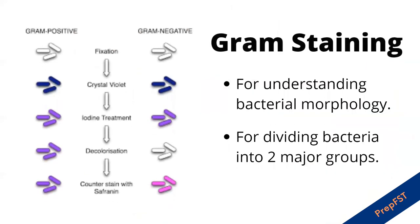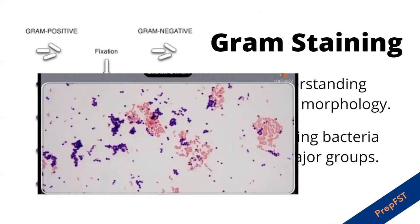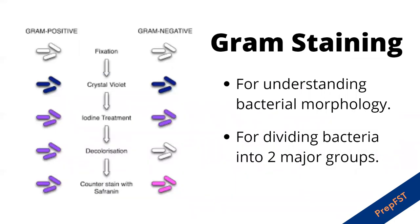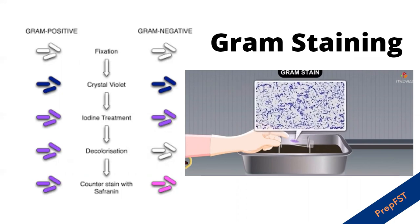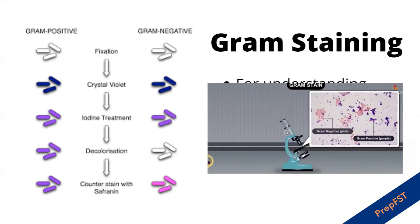Let's talk about gram staining, which is particularly very important to understand bacterial morphology. It shows the shapes and arrangement of bacterial cells as well as their gram reaction, which helps to classify them into two most important categories: gram positive or gram negative. These two groups depend on their reaction with the gram stain. Bacteria that retain the crystal violet iodine complex when a decolorizing agent is applied are known as gram positive, and the ones that lose the dye are known as gram negative cells.